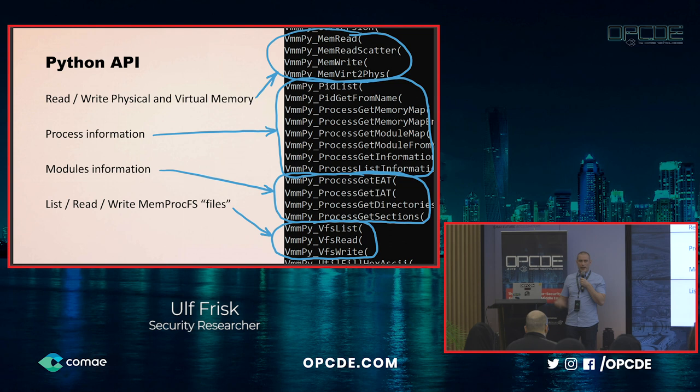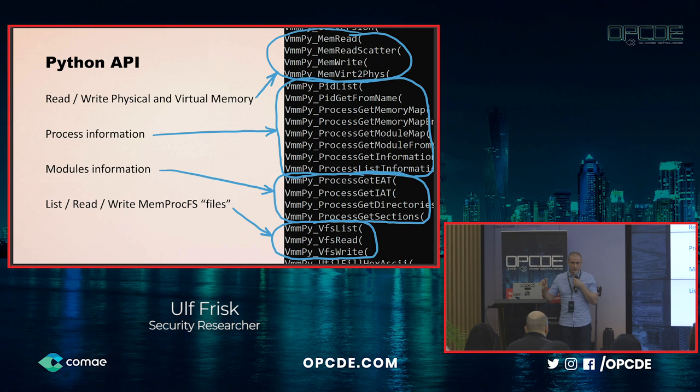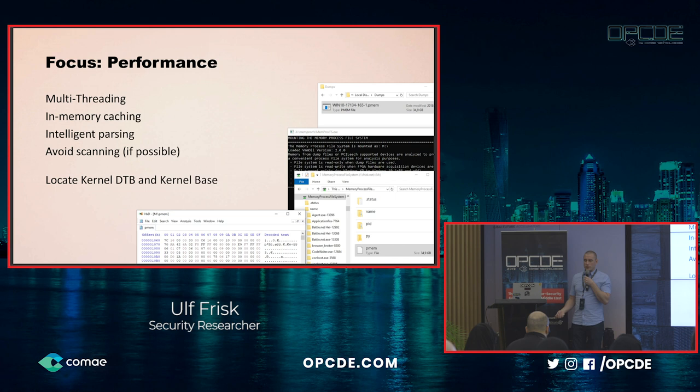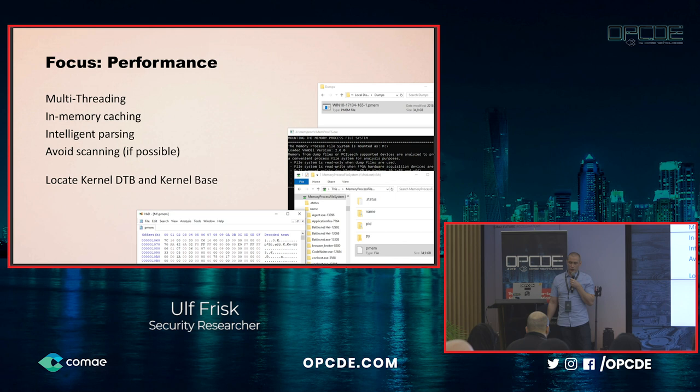The whole file system, even though it's not really mounted as a drive, still exists in the API world — so we can query the API and read and write these virtual files. When I was creating this, performance was super important. I'm really happy to have completed multi-threading since it's a huge boon, allowing me to do a lot of things in the background without affecting the user. I also rely on in-memory caching and some really intelligent parsing.